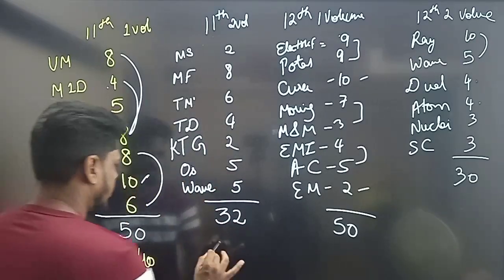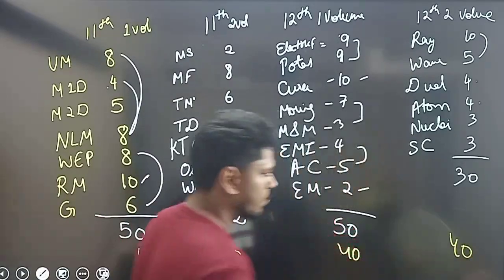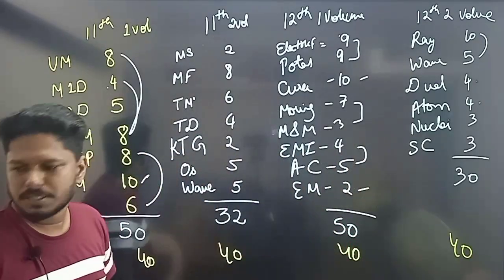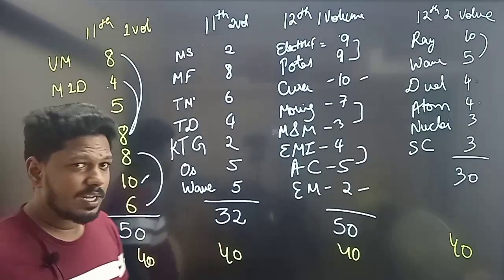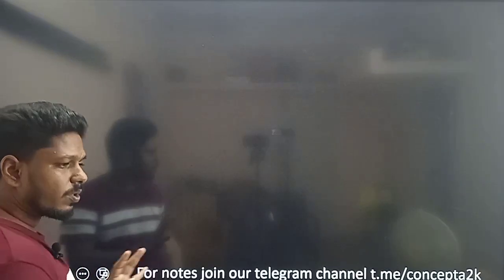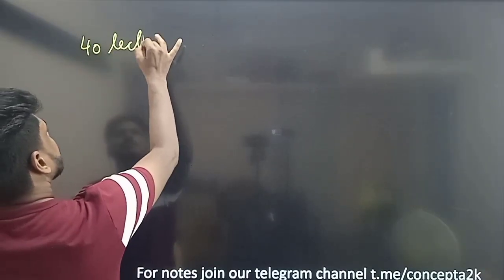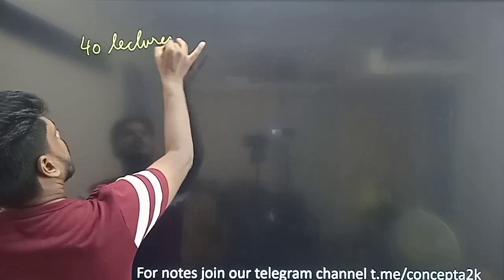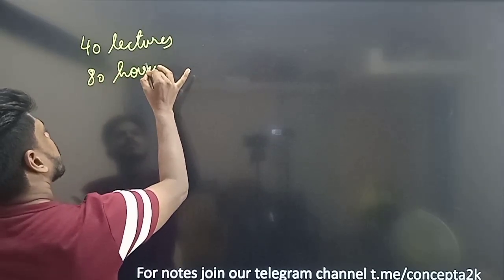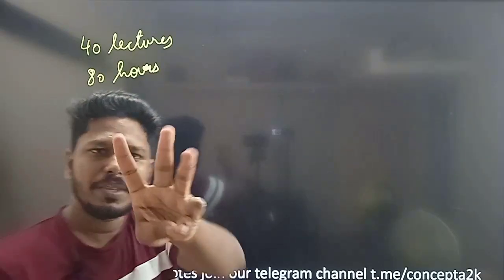Breaking it down: 40 lectures per section — 40, 40, 40, 40. So 40 lectures equals approximately 80 hours. With a monthly target of 30 days, that means 3 hours per day for physics.